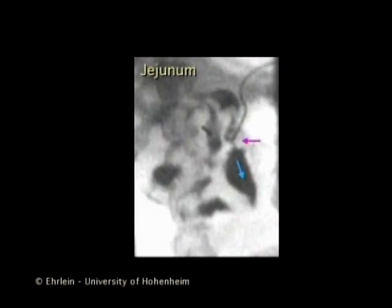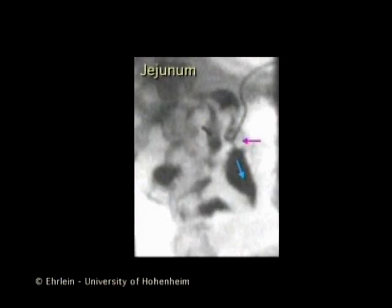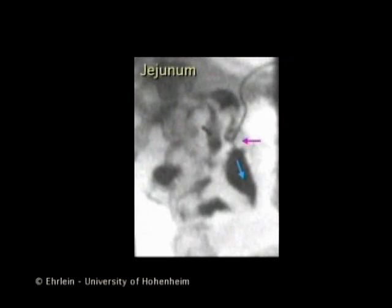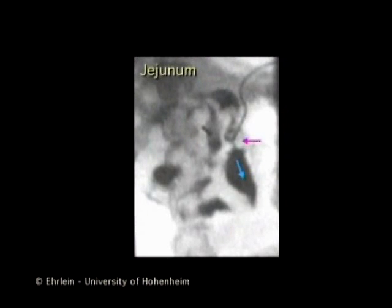In this video clip, we see the fed motor pattern of the jejunum. The blue arrow indicates the aboral direction of the loop.